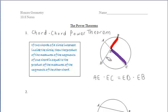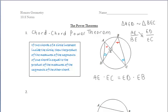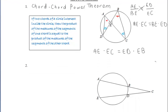Let's prove this theorem. I'm going to draw in segments AD and BC because two points determine a segment. Angle DAC is congruent to angle DBC because both inscribed angles intercept the same arc DC. Angle ADB is congruent to angle ACB because both angles intercept the same arc AB. We also have vertical angles in the diagram. As a result, we can prove triangles AED and BEC similar by angle-angle. Then setting up a proportion, because corresponding sides of similar triangles are proportional, and using the means-extremes product theorem, we've reached our conclusion.